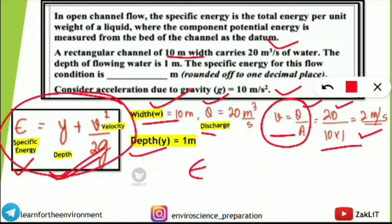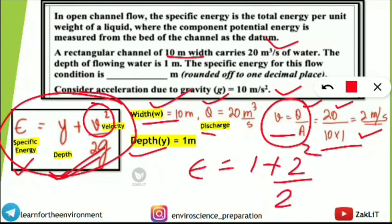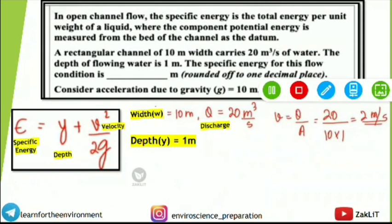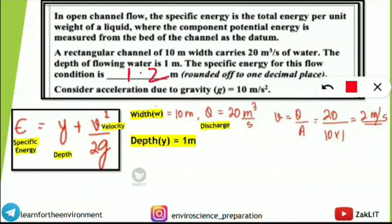Now substituting into the specific energy formula: E = y + v²/(2g) = 1 + (2²)/(2 × 10) = 1 + 4/20 = 1 + 0.2 = 1.2 meters. So the specific energy for this flow condition is 1.2 m. By knowing depth, velocity, and g, you can solve this in under a minute for full marks.